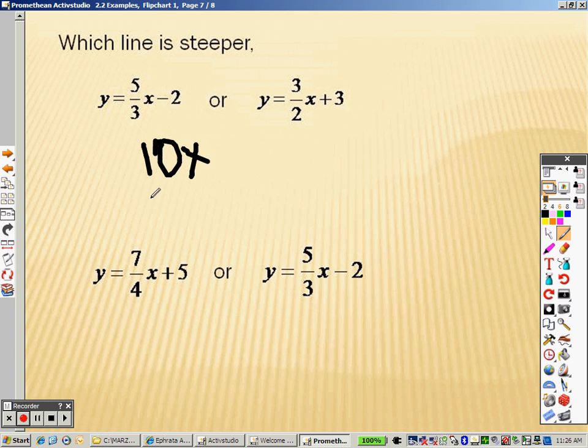because the slope's in front of the x here. 10 is bigger than 1, which means this is steeper. So the bigger the number, the steeper the slope is, but it's the absolute value.